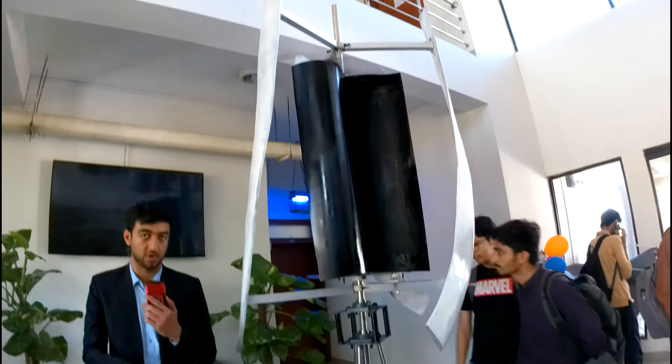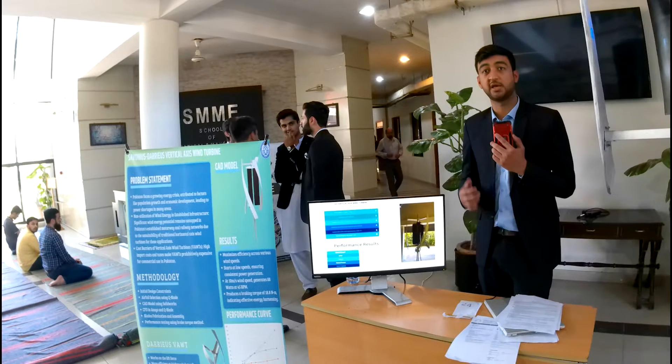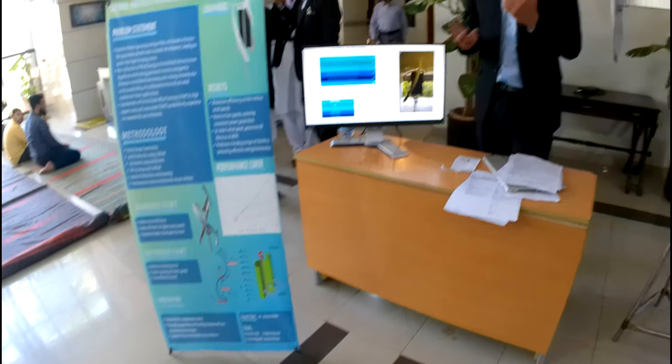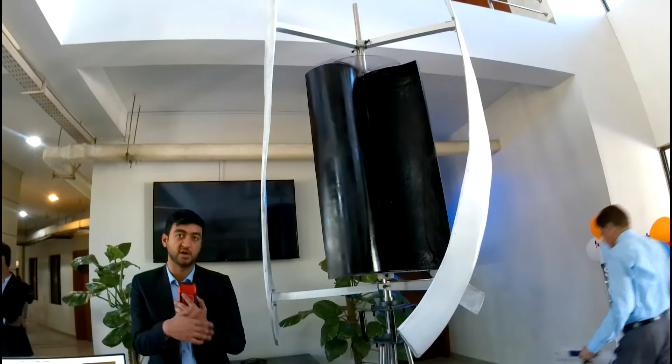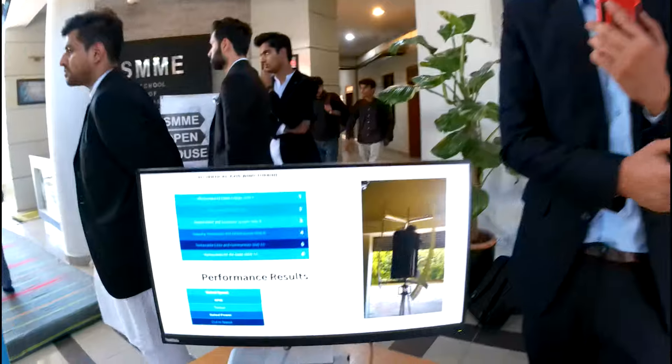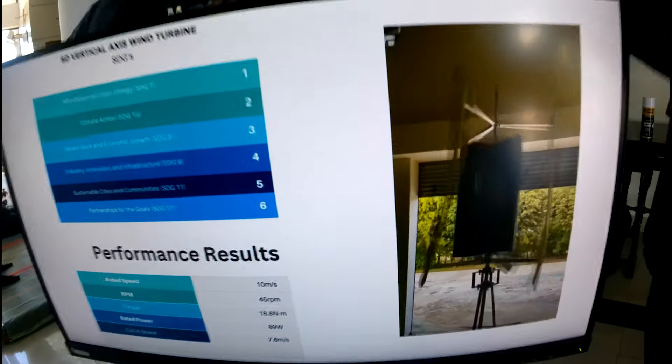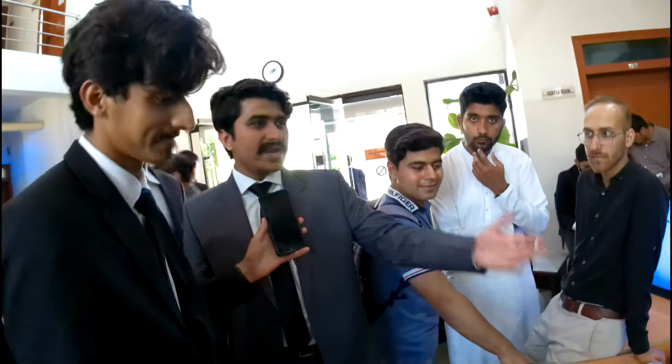Assalamu alaykum. Basically this is a vertical axis wind turbine. The main application is that it is installed on the highway. When vehicles pass by, it will get so much wind speed. Its power capacity is 88 watts and the rpm is 45 rpm. This has two types of blades. The outer one is called Darrieus type. They are operational in high wind speed. The inner blades are Savonius. So these two types of blades are combined to work in different range of wind.